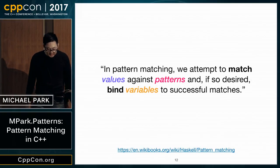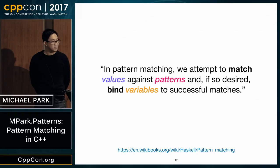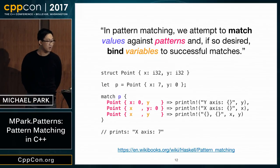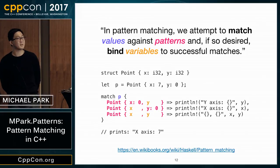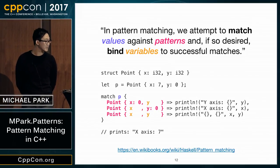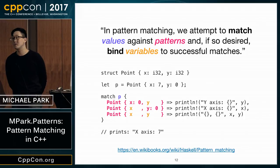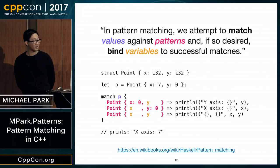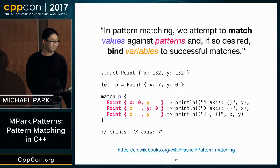What is pattern matching? From Haskell Wikibooks: 'In pattern matching, we attempt to match values against patterns, and if so desired, bind variables to successful matches.' Here's a trivial example from Rust: we declare a Point class with fields x and y, create a variable of type Point with values 0 and 7, match on it, and provide cases in order. It falls into the second case because y is 0, and we print 'x axis to 7'.